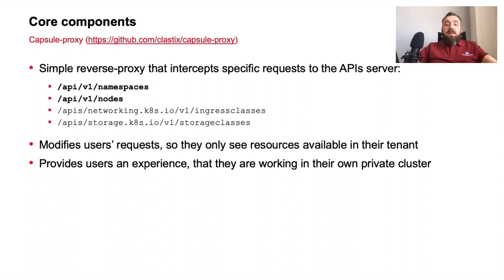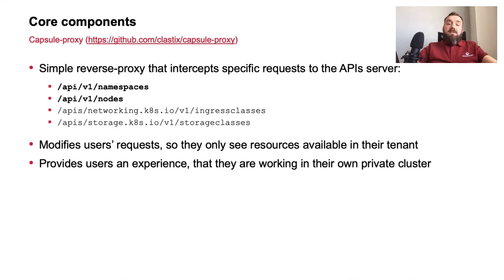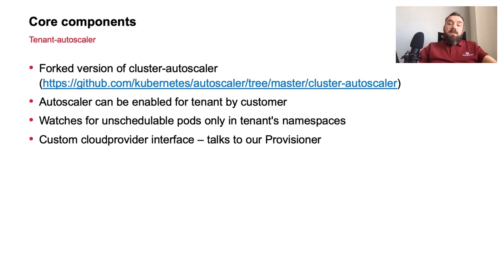Capsule Proxy is another member of the Capsule ecosystem — a simple reverse proxy that intercepts specific requests to the API server. Currently, nodes and namespaces endpoints are already in the open source version of Capsule Proxy, and ingress classes and storage classes are in our private fork, but we are going to contribute them soon. Capsule Proxy modifies user requests so they only see resources available in their tenant, providing an experience as if they are working in their own private cluster. The last component is Tenant Autoscaler — a forked version of cluster autoscaler that watches for unschedulable pods only in the tenant namespaces, with a custom implementation of the cloud provider interface that talks to our Provisioner, enabling support for nodes from different cloud providers in a single tenant.